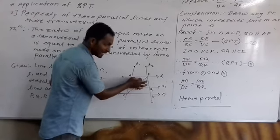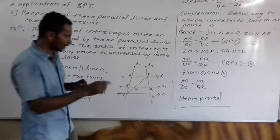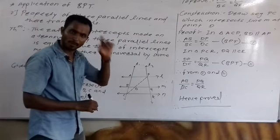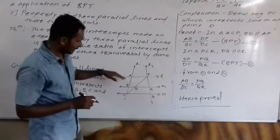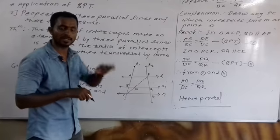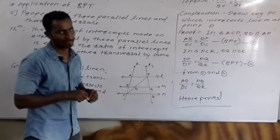...segment BD on side AP is parallel. And in triangle PCR, we can notice that segment DQ on side CR is parallel. So, you know that when a line segment is drawn in a triangle, it intersects two sides and is parallel to the other side. So, we can apply BPT theorem.